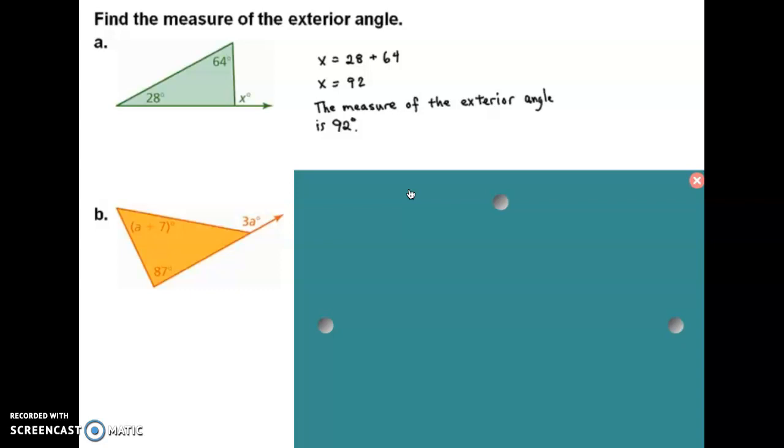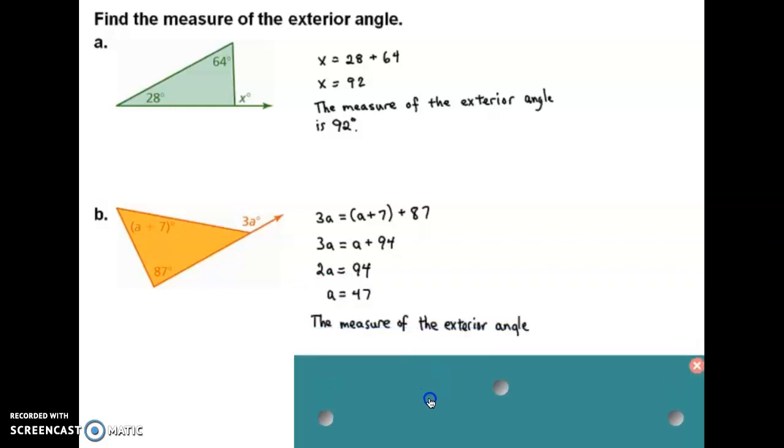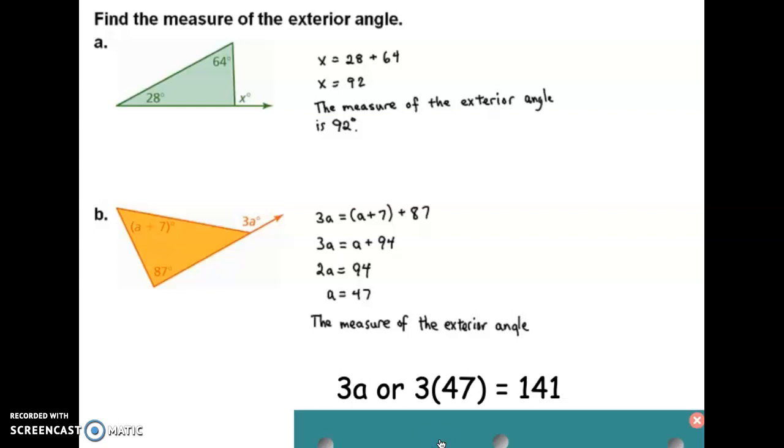So, the measure of the exterior angle is 92, and that means that that supplement there is equal to 88. Now, here, we're going to set 3A equal to these two interior angles, and we're going to go ahead and solve, and that's our work. A is equal to 47, and then remember that that's only what A equals. We want to know what 3A is, so we've got to go just a step farther, and we're going to substitute in that 47 times 3, and that is 141. So, that actually there is 141 degrees.